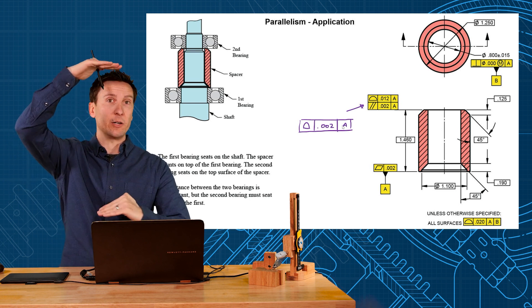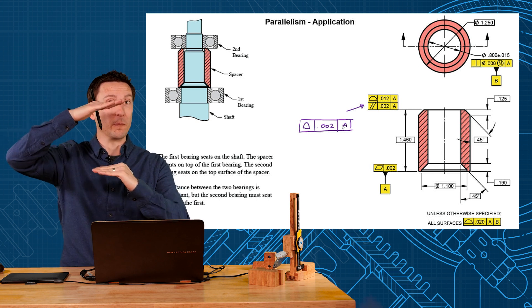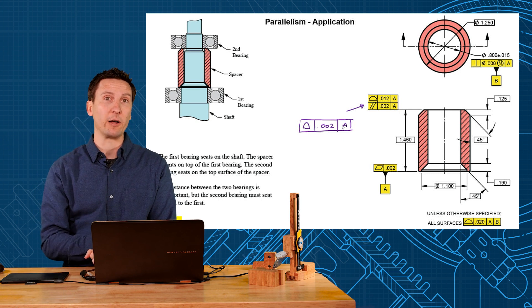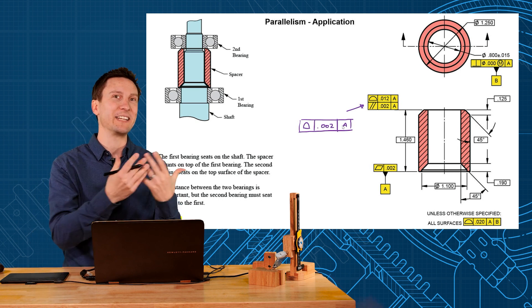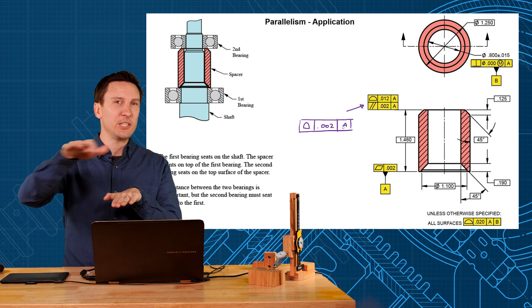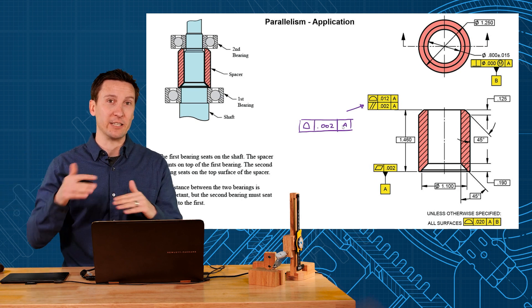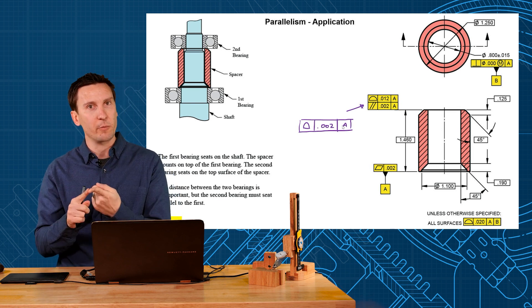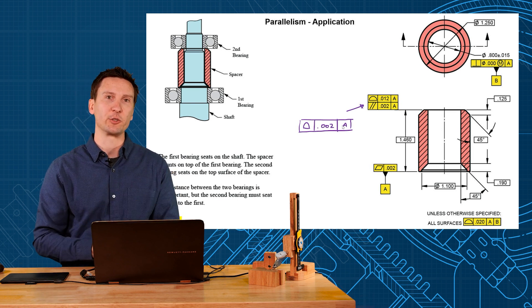The distance can vary because the spacing of the bearings is unimportant. It's just the parallelism that's more critical. So by giving a bigger profile tolerance and a tighter parallelism, you can make it easier to manufacture. Machines generally cut parallel, that's easy. It's dialing in the right height that's more difficult. So a greater profile, tighter parallelism, easier to manufacture, but we still get a good functional part.